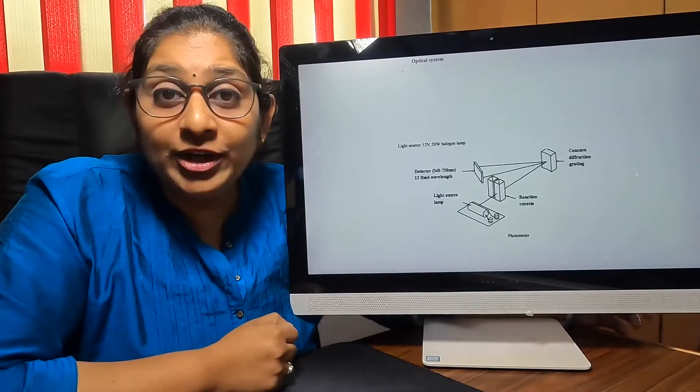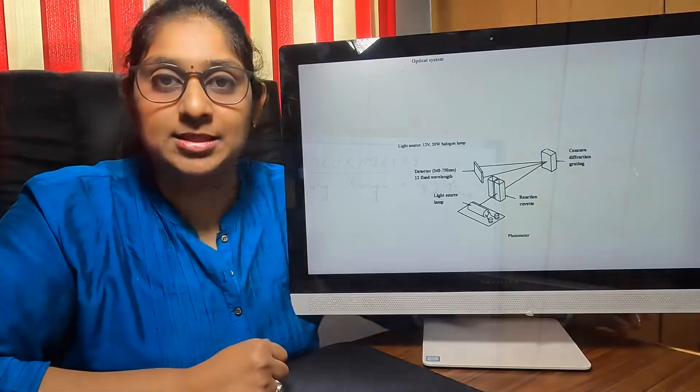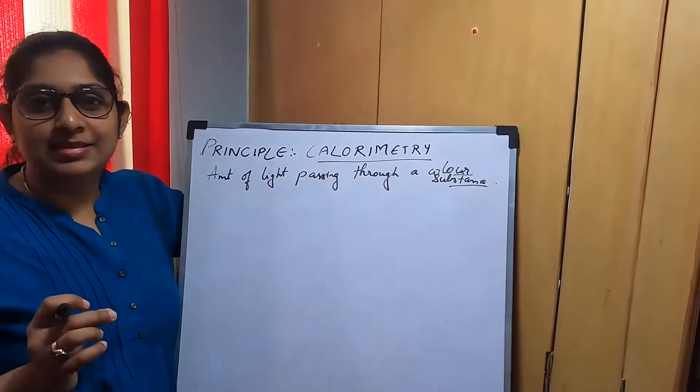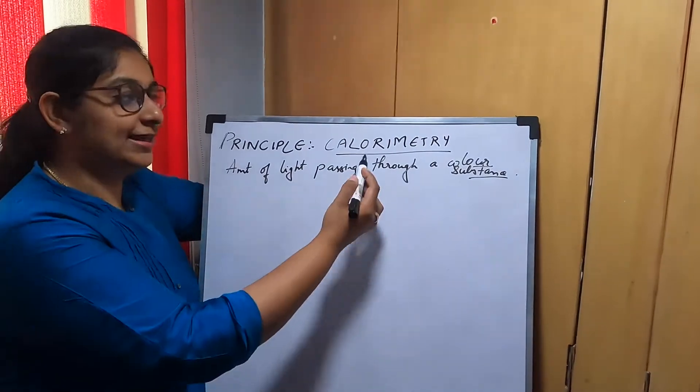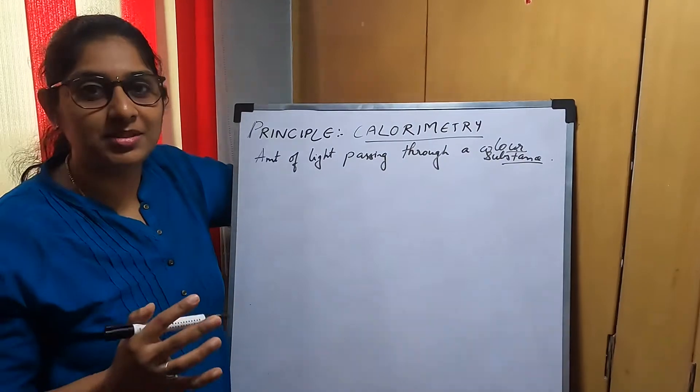This video will explain the basic principle of how a biochemistry analyzer works. The principle used in a biochemistry analyzer is calorimetry, which measures the amount of light passing through a colored substance.